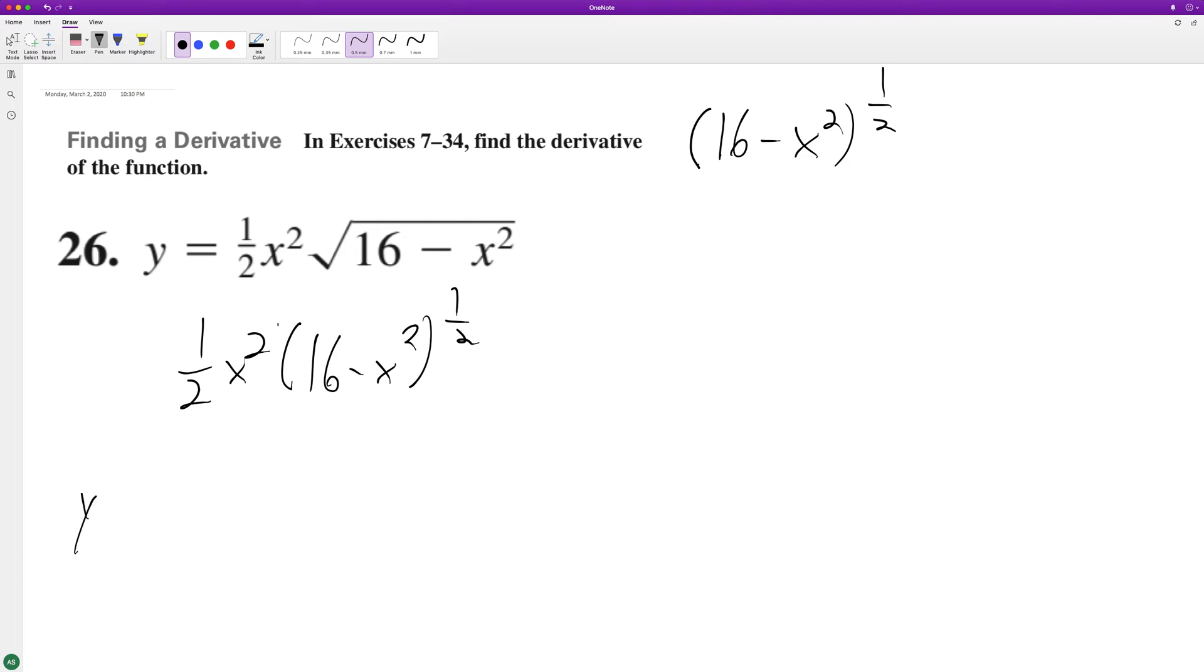Okay, so y prime is going to be equal to using the product rule. Starting off, we get 2x times 1 half. So it's x times 16 minus x squared raised to the 1 half.